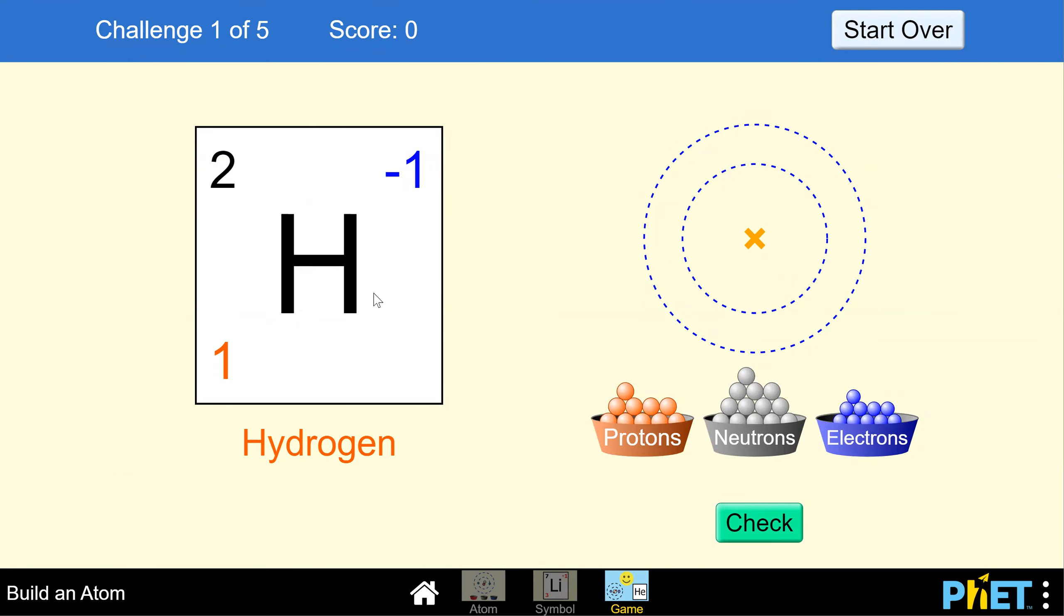The goal is to build up our hydrogen. If we think about what the bottom left number means, that's the number of protons we have—so we have one proton. The top left number, that number 2, is the number of protons and neutrons. Right now we're at one, we need to get to two.